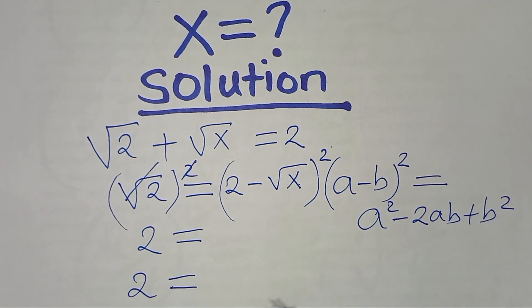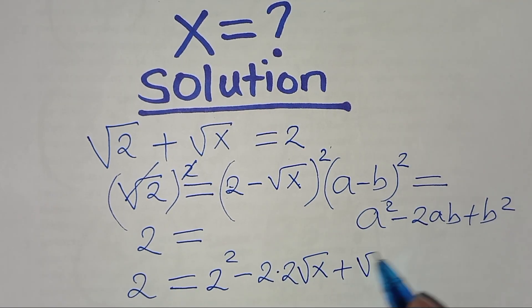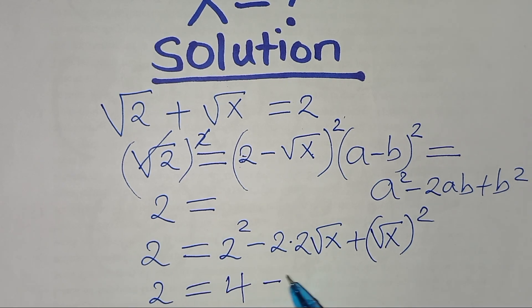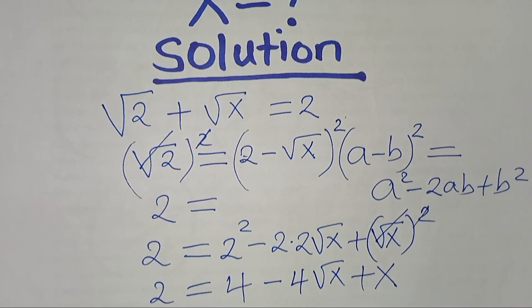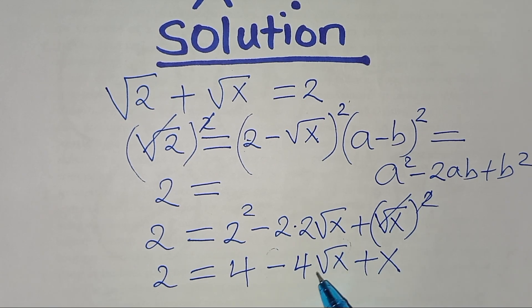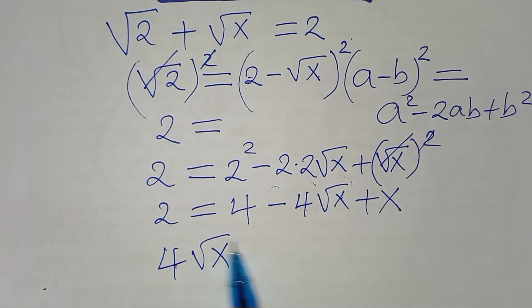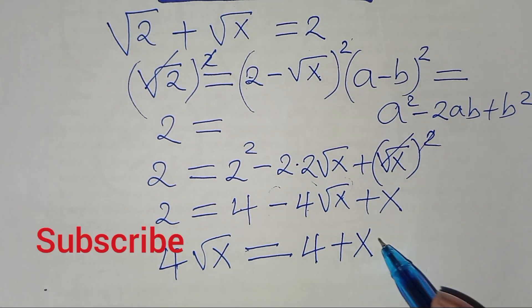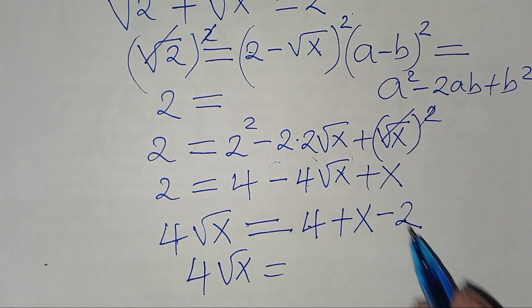Applying that identity, we get: 2 = 2² − 2·2·√x + (√x)², which simplifies to 2 = 4 − 4√x + x. Now we move −4√x to the left-hand side, giving 4√x = 4 + x − 2.